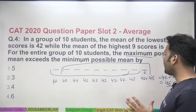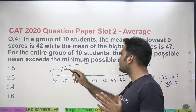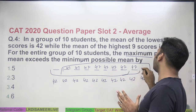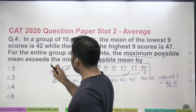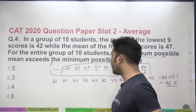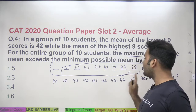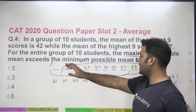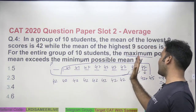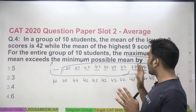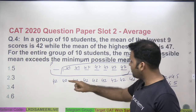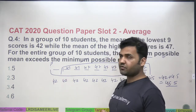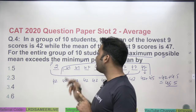To find the minimum possible mean, I'll keep the highest 9 values at 47. Now I need to find what the lowest value should be so that the average of the lowest 9 comes out to 42. These 8 values each have 5 extra compared to 42, so 8 × 5 = 40 is already extra.